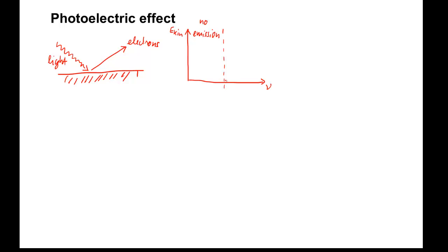If the frequency is above the threshold, we do observe photoemission of electrons. And the kinetic energy, that is the velocity of the electrons, increases linearly with frequency.